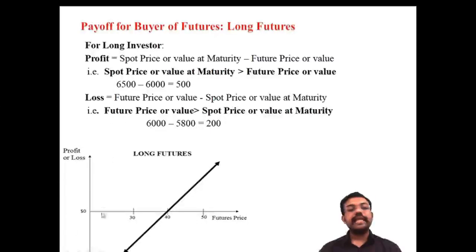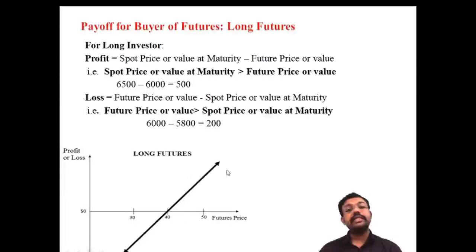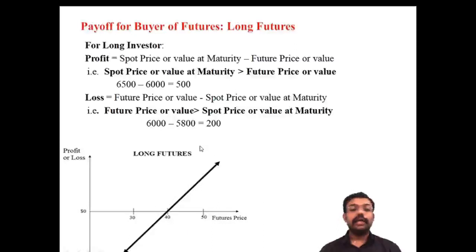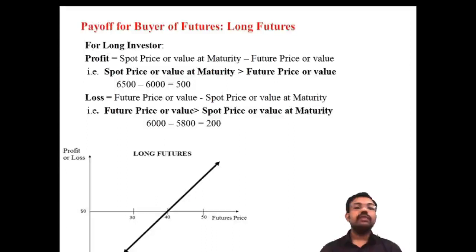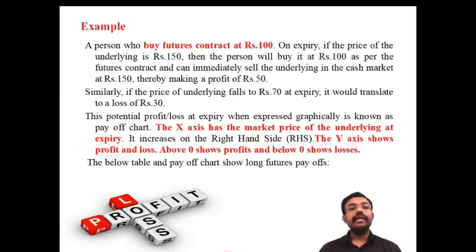This is a diagrammatic representation. Normally for long futures, as the market increases, the long future similarly increases in profit — the trend of the diagram always shows an increasing trend. As the market goes up, profit increases; when the market drops below the purchase price, losses occur.